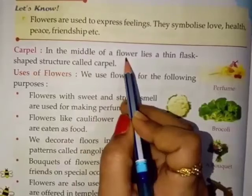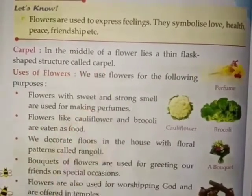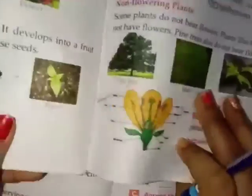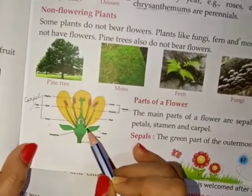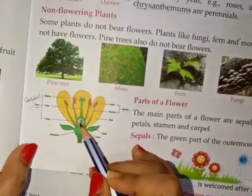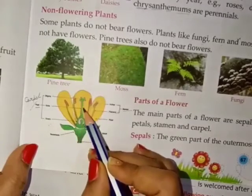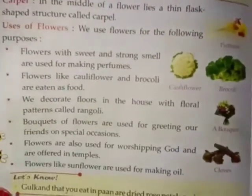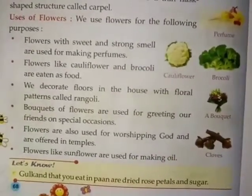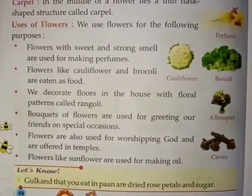In the middle of a flower lies a thin flask-shaped structure called carpel. It is also called pistil.